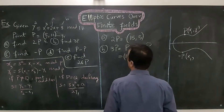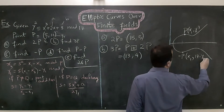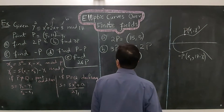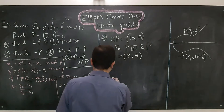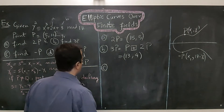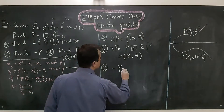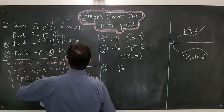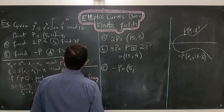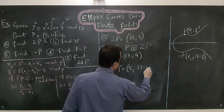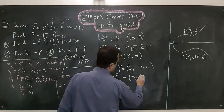The y-coordinate of minus P is 17 minus y1, since we are working mod 17. If we had a different prime, we would subtract that prime number instead. So in our case, minus P = (x1, 17 - y1) = (5, 17 - 11) = (5, 6). So minus P equals (5, 6).